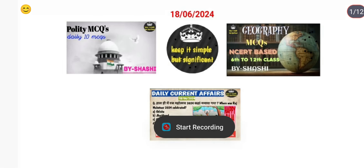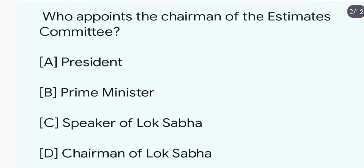Hello everyone, welcome to my channel 'Keep It Simple But Significant.' I am your host Sassy. Let us start today's discussion: who appoints the chairman of the Estimate Committee? The Estimate Committee ka chairman kiske dwara appoint kiya jata hai? It is appointed by the Speaker of the Lok Sabha, from amongst its members, and from the ruling party.